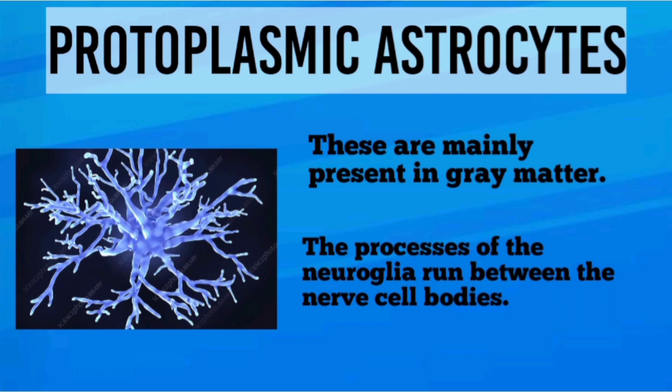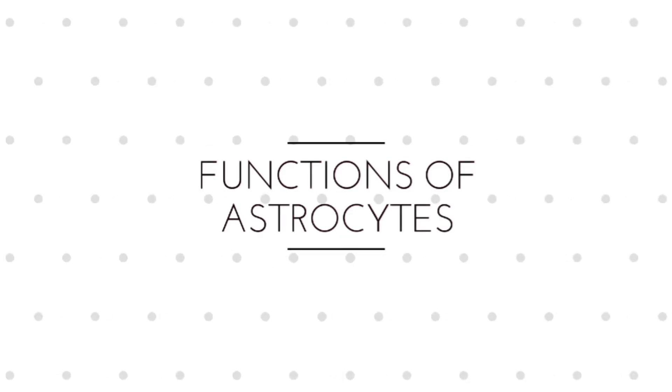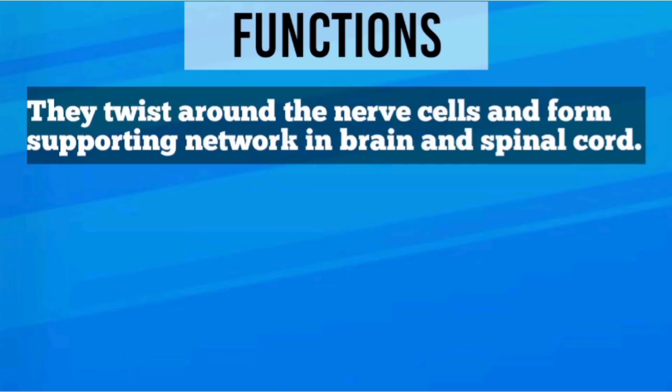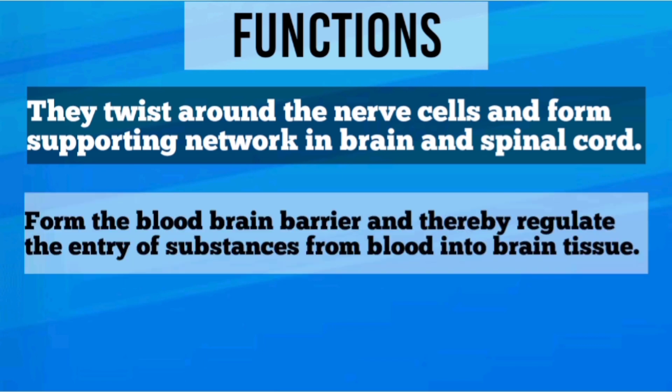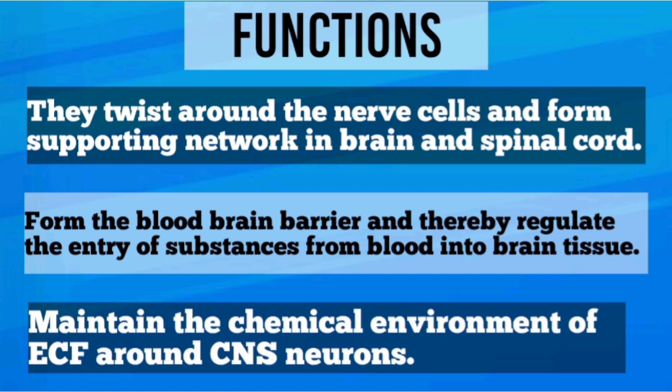Functions of astrocytes: They twist around the nerve cells and form the supporting network in the brain and spinal cord. They also form the blood-brain barrier, thereby regulating the entry of substances from the blood into the brain tissues.